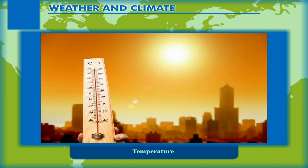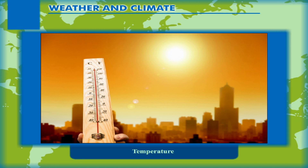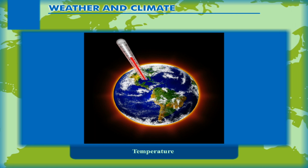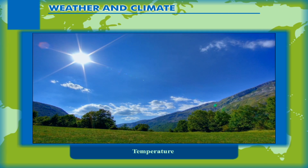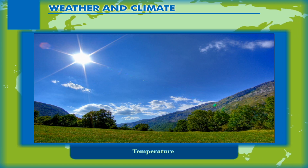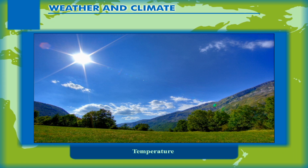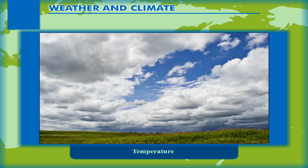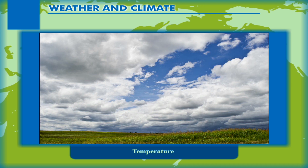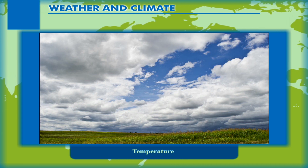Temperature. Temperature denotes how hot or cold the atmosphere or the air around us is. Temperature is defined as the degree of heat of any body. The sun is the main source of heat for the atmosphere. The amount of heat absorbed by the atmosphere determines the earth's temperature. Temperature of any place may change during the day as it depends on several factors like the time of day, cloud cover, etc.